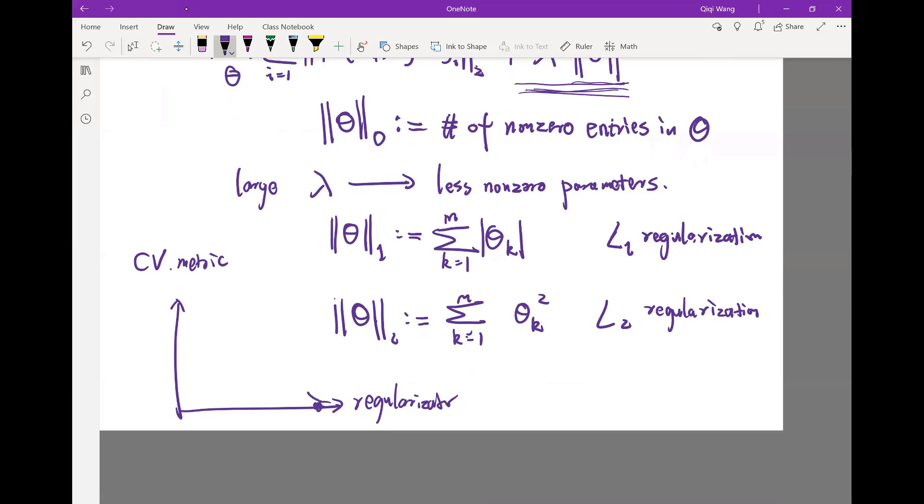And then the cross-validation metric is going to increase. And when you have zero regularization, it's essentially you have no regularization. And unless the number of parameters is small enough, otherwise you're going to have a decrease in the CV metric.